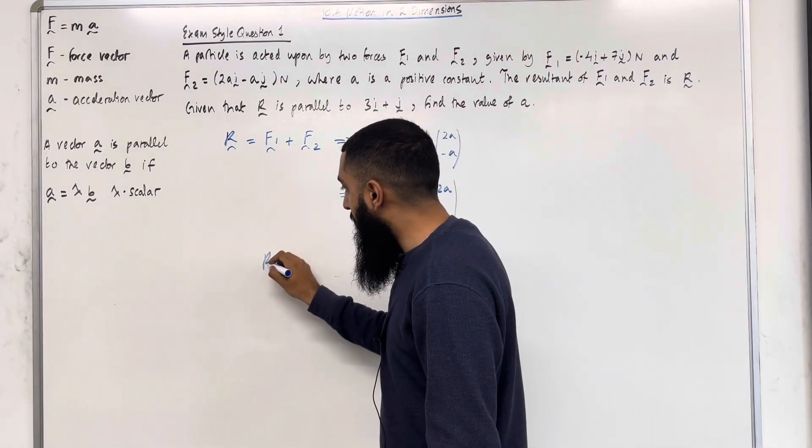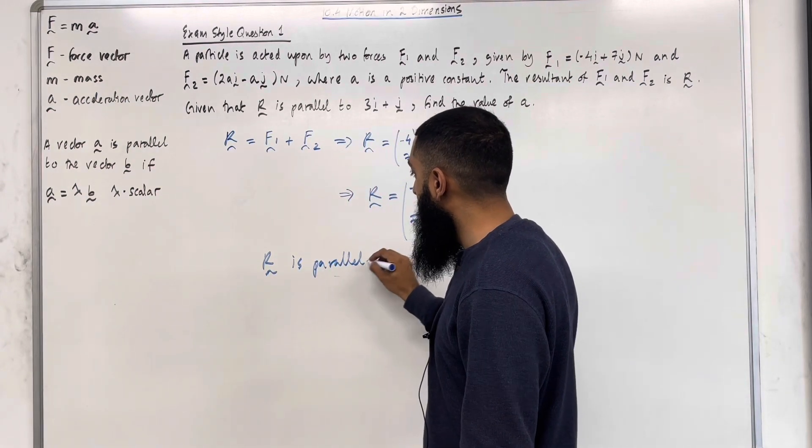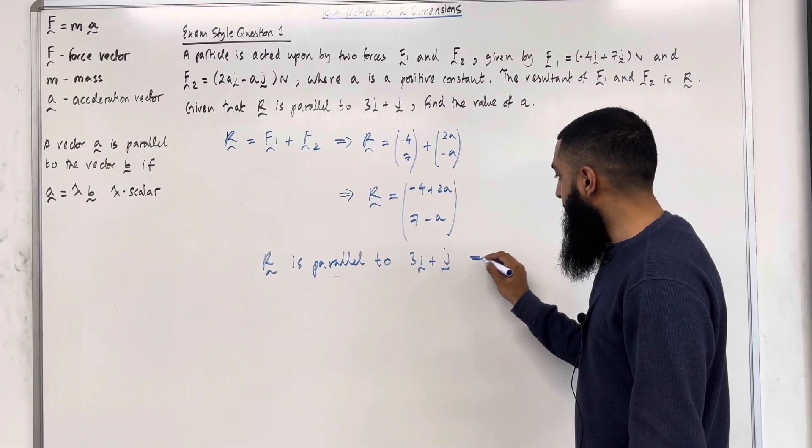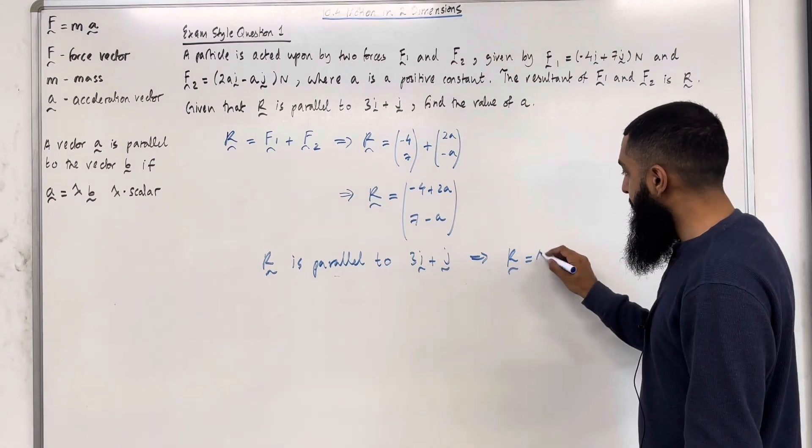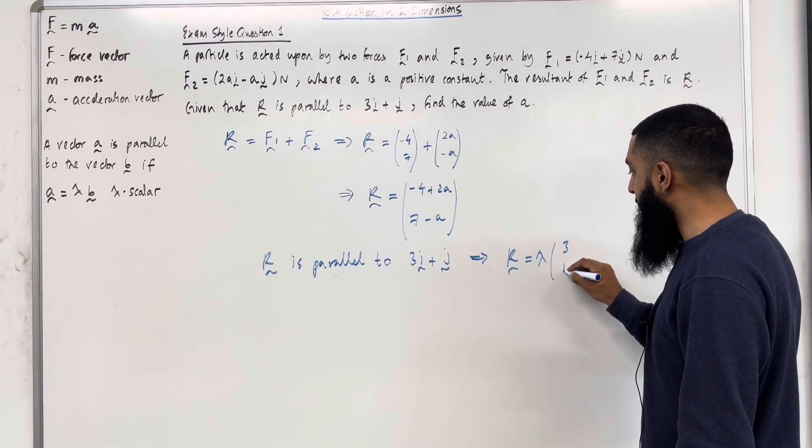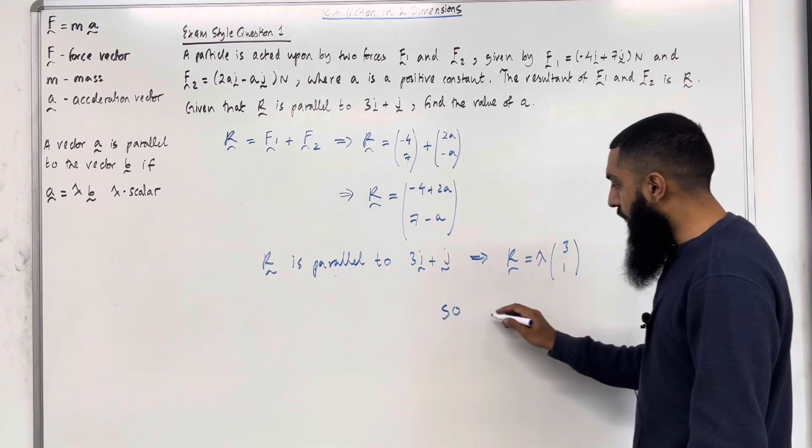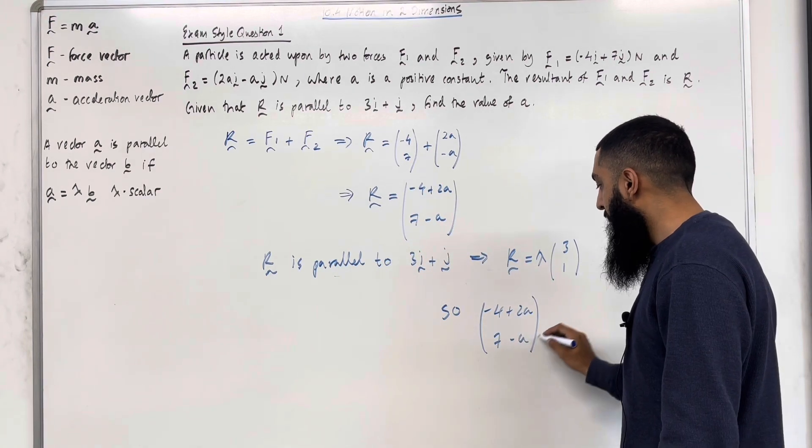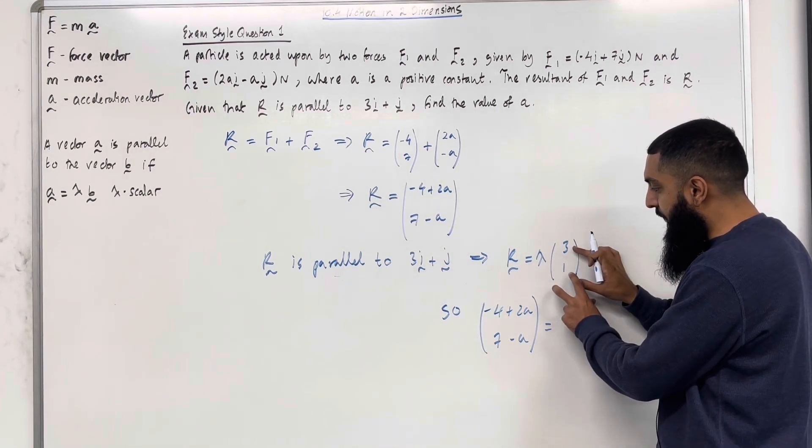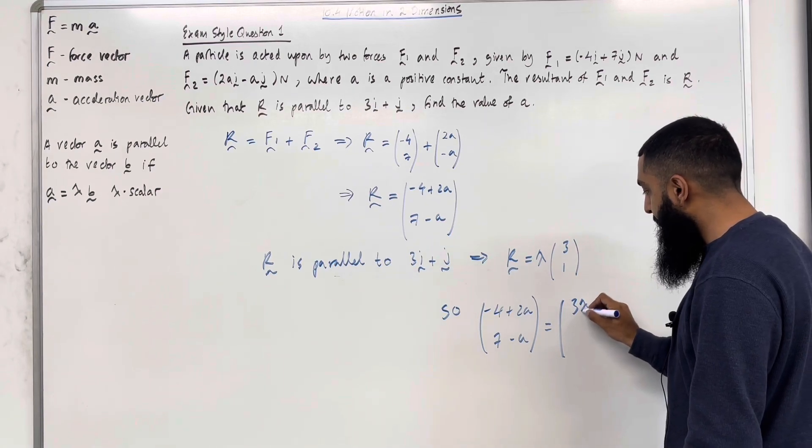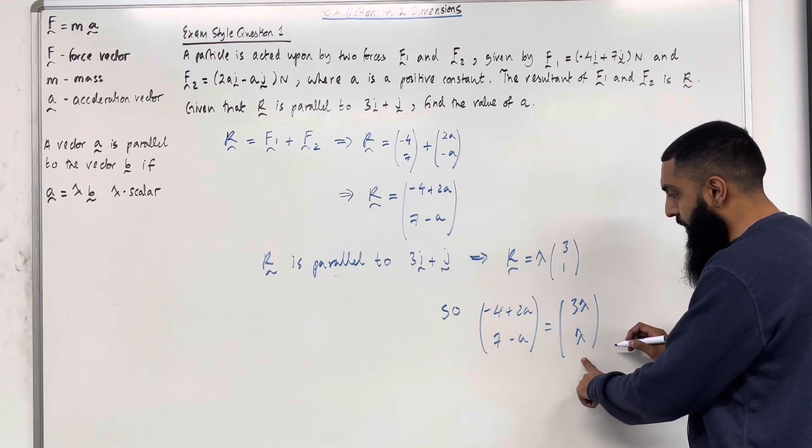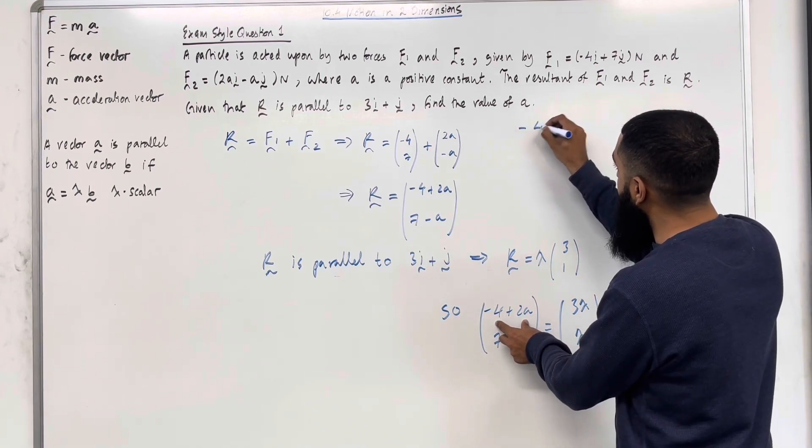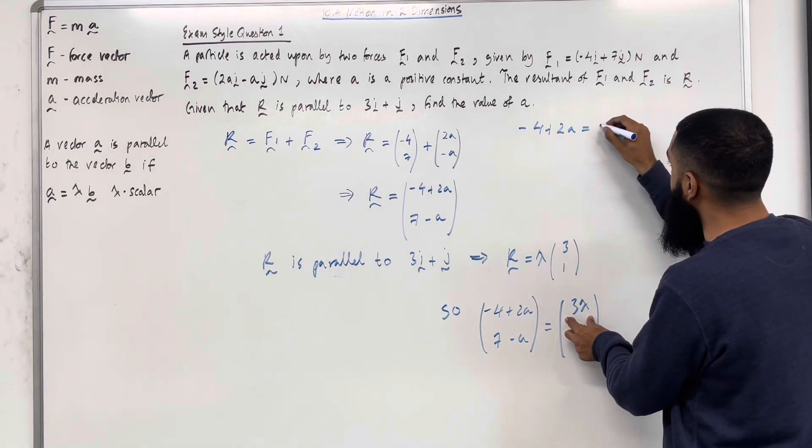In the question, we are told that R is parallel to 3i plus j. So we're going to use the definition of parallel vectors. This implies that R has to equal lambda lots of the vector 3i plus j, which is lambda lots of 3 and 1. So the resultant R, which is minus 4 plus 2a and 7 minus a, has to equal lambda lots of this vector, which gives 3 lambda as the i component and lambda as the j component. Since these two vectors are equal, I can compare the i components and the j components. So minus 4 plus 2a equals 3 lambda, equation 1, and 7 minus a equals lambda, equation 2.